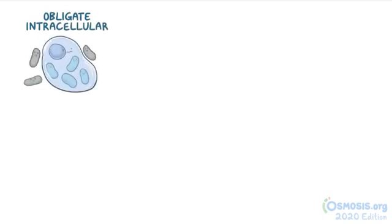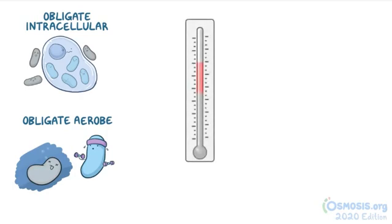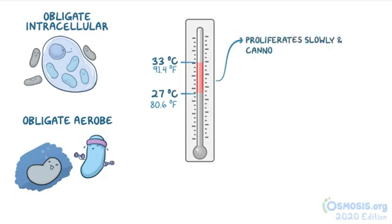Mycobacterium leprae is an obligate intracellular microorganism, which means it can survive only inside cells, and it's an obligate aerobe, which means it can survive only in the presence of oxygen. Mycobacterium leprae grows best at cool temperatures between 27 and 33 degrees Celsius, and it proliferates slowly and cannot be cultivated in vitro.